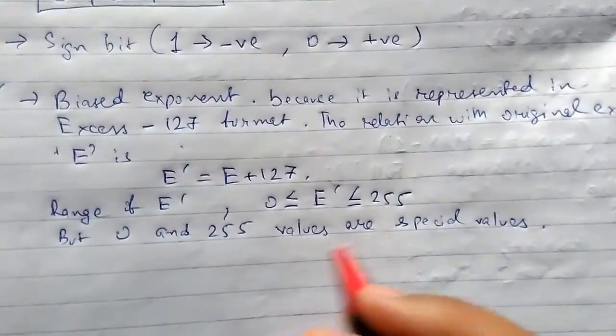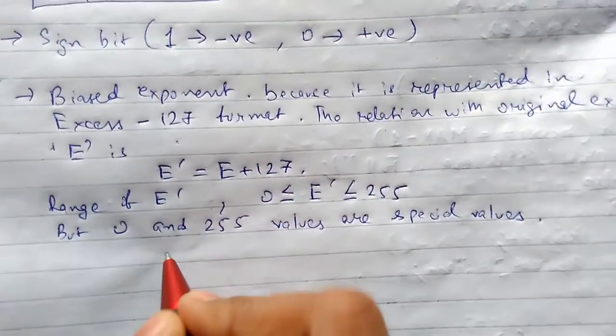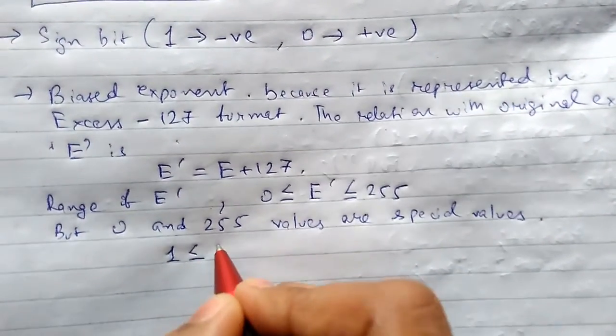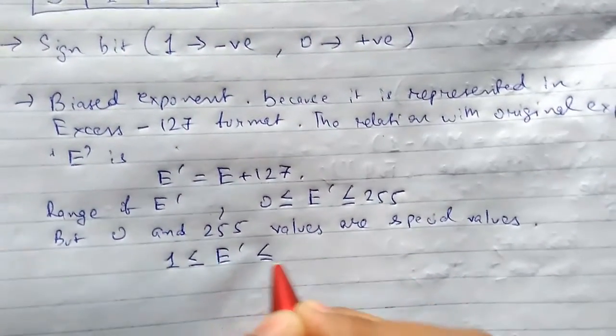Therefore the modified range will be 1 less than or equal to E bar less than or equal to 254.